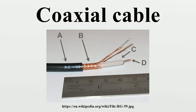Attenuation per unit length in decibels per meter is dependent on the loss in the dielectric material filling the cable and resistive losses in the center conductor and outer shield. These losses are frequency dependent, becoming higher as the frequency increases. Skin effect losses in the conductors can be reduced by increasing the diameter of the cable — a cable with twice the diameter will have half the skin effect resistance, halving the dB per meter loss. Engineers consider not only the loss in the cable but also the loss in the connectors. The velocity of propagation in meters per second depends on the dielectric constant and permeability.